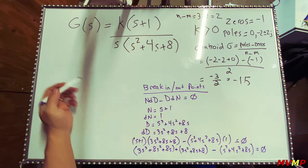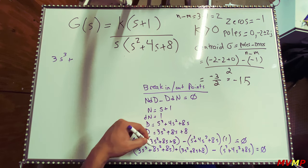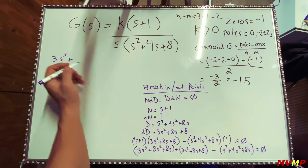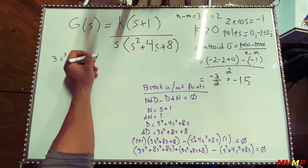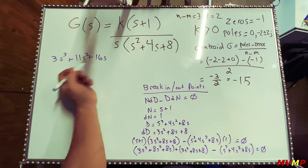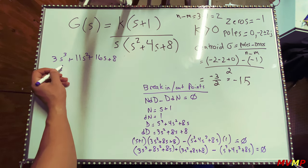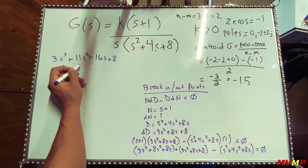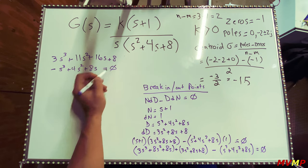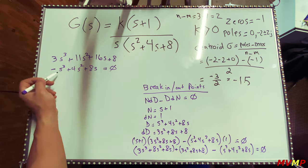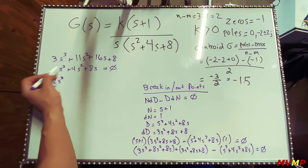Combining terms: 3s cubed plus 11s squared plus 16s plus 8 minus s cubed minus 4s squared minus 8s equals zero, which simplifies to 2s cubed plus 7s squared plus 8s plus 8 equals zero.